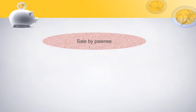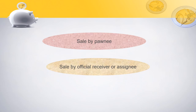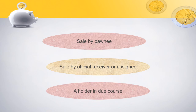Exception 6: Sale by pawnee. If the right to sell has been given to another person, that person can also execute the sale. Exception 7: Sale by official receiver or assignee. In case of any assignment contract, the official receiver has the right to treat the goods or assets in whatever way he can, and in that case he can sell on his own. Exception 8: A holder in due course. Particular goods may travel from one person to another, and after a very long period of time it gets into the hands of a particular person called a holder in due course, and this person also has a right to sell.